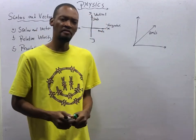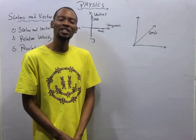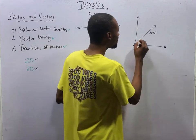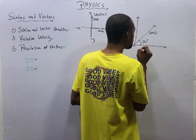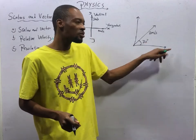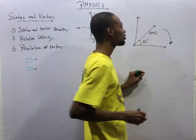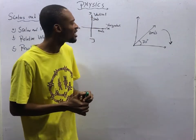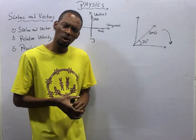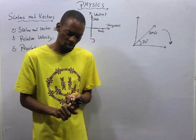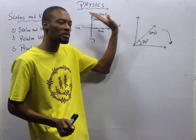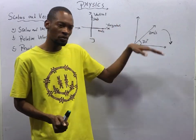Now, how do we resolve vectors? What should you know when it comes to resolution of vectors? This is an incline at a certain angle. If we say this angle is 30 degrees, it means this vector is 2 meters per second at 30 degrees to the horizontal. Angles are mostly formed to the horizontal. When you are given any vector, you must resolve it to the vertical direction and also to the horizontal direction — so it is in both directions. You first resolve it to the vertical, then you resolve it to the horizontal.